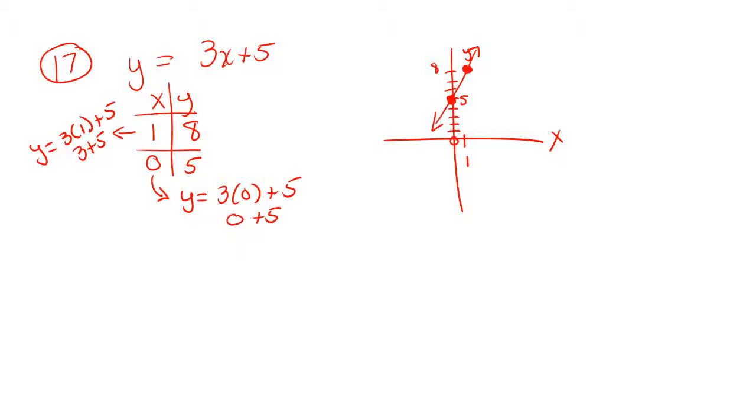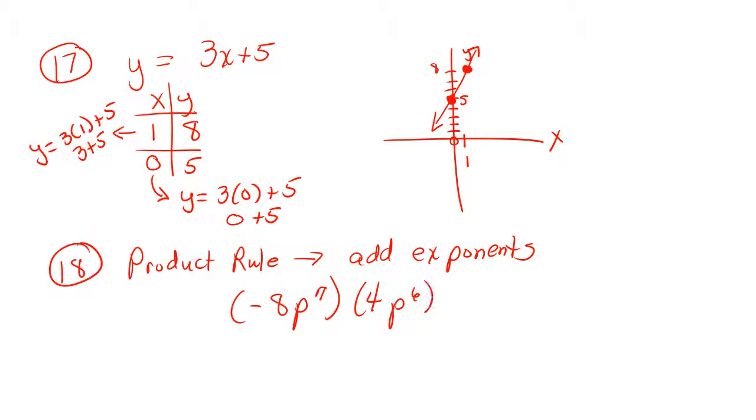Question number 18 switches gears and asks us to use the product rule. Remember the product rule for exponents says that you are to add the exponents. This problem is negative 8p to the 7th times 4p to the 6th. You will multiply the coefficients and get negative 32, then add the exponents and get p to the 13th. That's the final answer.